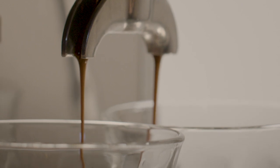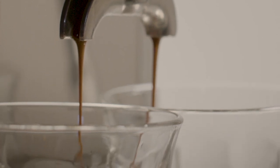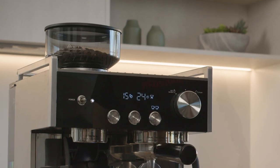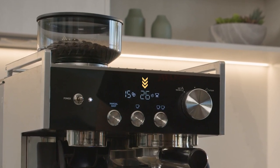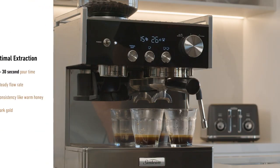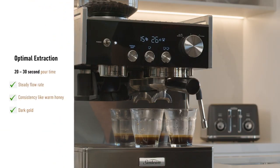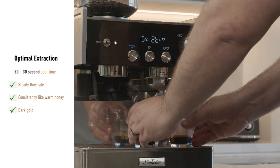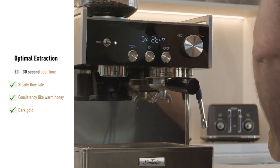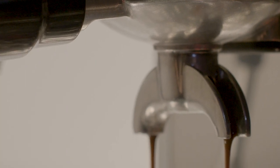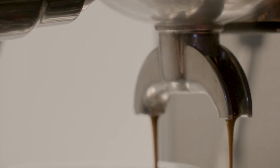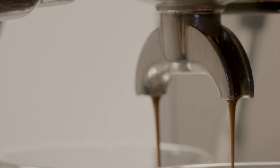Another good espresso quality indicator is the extraction time or pour time. Generally speaking, the best time to aim for is between 20 to 30 seconds for both one cup and two cup shots. Perfect espresso should have a steady flow with a consistency that's similar to warm honey. The color should be a dark gold. This type of extraction will help you draw out the sweetest flavor and texture for rich tasting espresso.